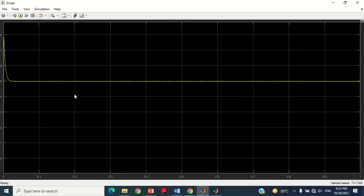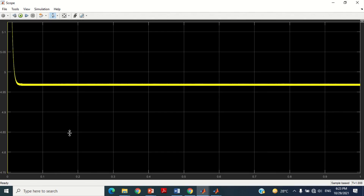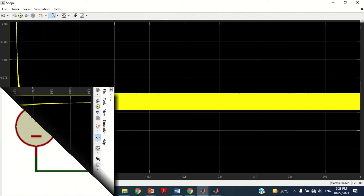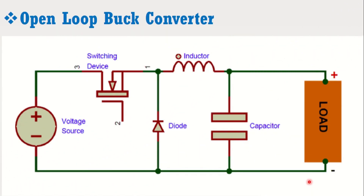It means the buck converter has successfully reduced the voltage from 12 volts to 5 volts. In this model, we have discussed the open loop buck converter. In open loop mode, we need manual tuning of the duty cycle of the pulse generator, so we have to try it again and again to get accurate results.